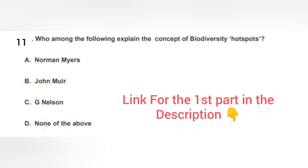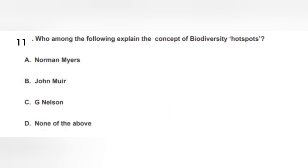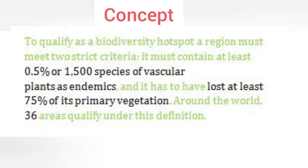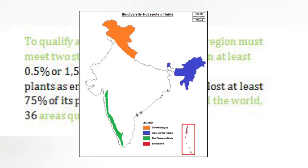We'll start with the 11th question: Who among the following explained the concept of biodiversity hotspot? The correct option is A — Norman Myers explained this biodiversity concept. According to him, a region can be called a biodiversity hotspot if it meets two criteria: number one, it should have 0.5% or 1,500 species of vascular plants as endemic, and along with that, it must have lost at least 75% of its primary vegetation. Around the world there are 36 biodiversity hotspots.